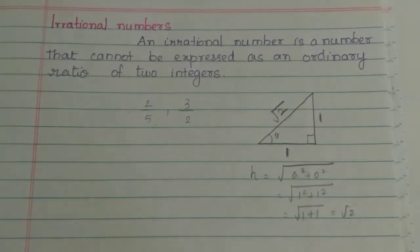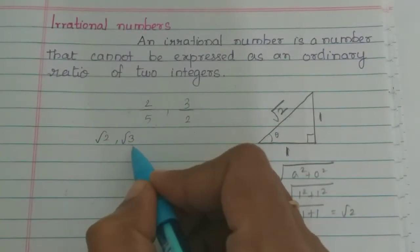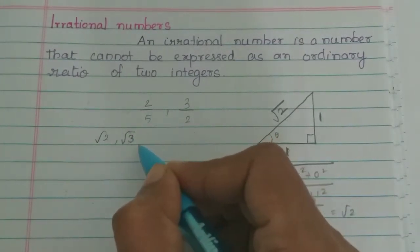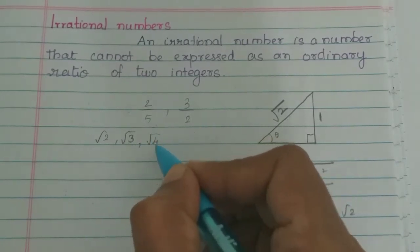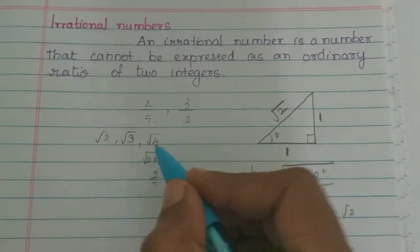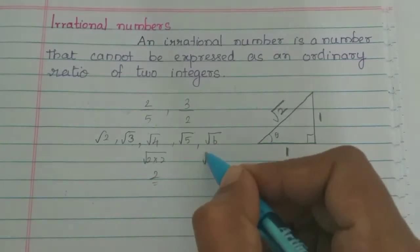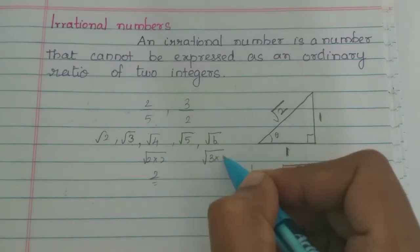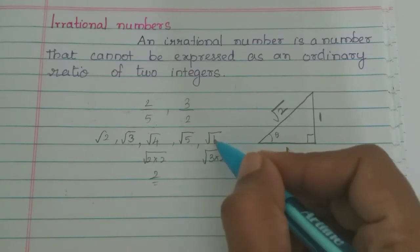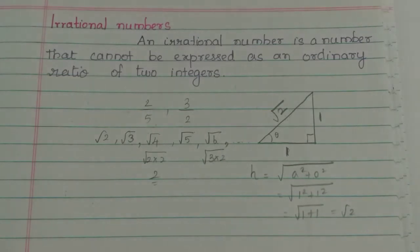Some examples of irrational numbers: root 2, root 3 — root 3 is also an irrational number. Now root 4 is 2 into 2, so root 4 equals 2, which is rational. Root 5 is an irrational number. Root 6 is composite — if we look at 3 into 2, there is a 3 and a 2 — so root 6 is also an irrational number. Likewise it goes on.